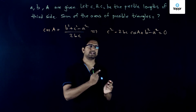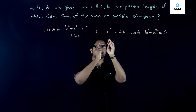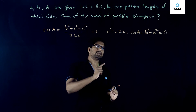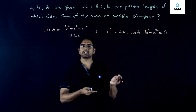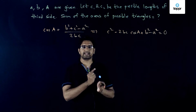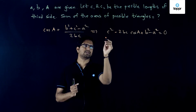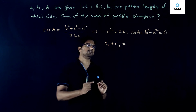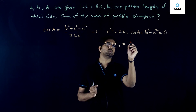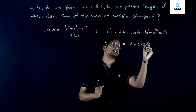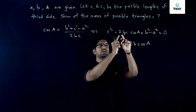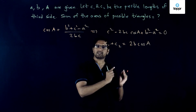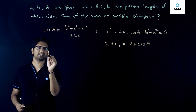This is indeed a quadratic if we consider C as the unknown variable and all other quantities as constants. The two roots of this quadratic are C1 and C2. By Vieta's formulas, the sum of the roots equals the negative of the coefficient of C, so C1 + C2 = 2B·cos A.